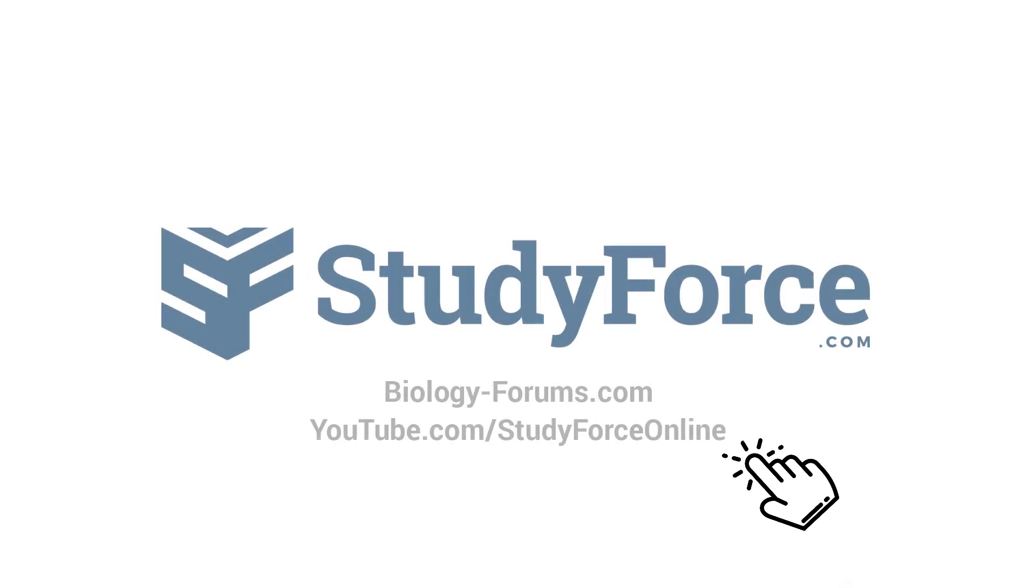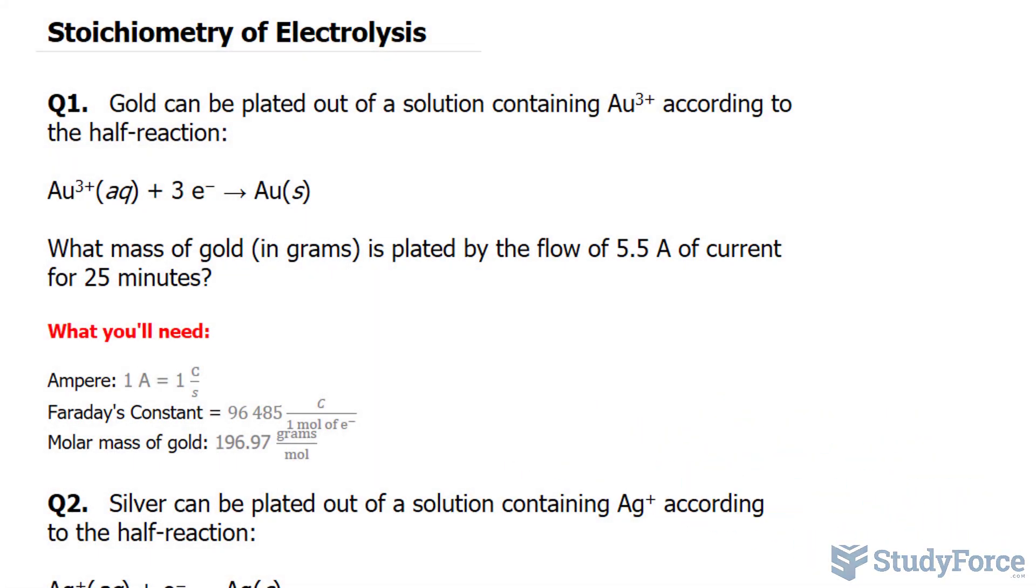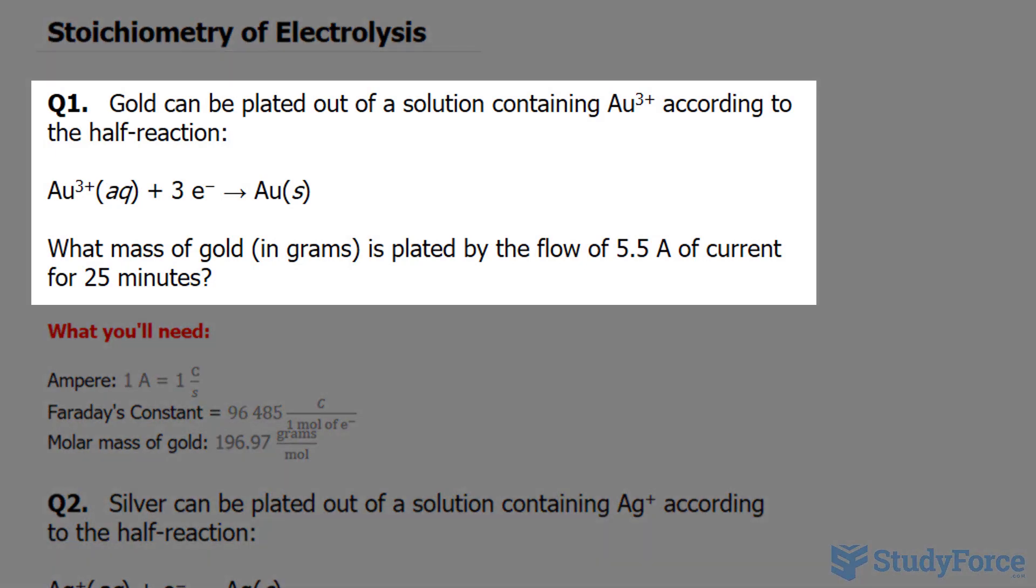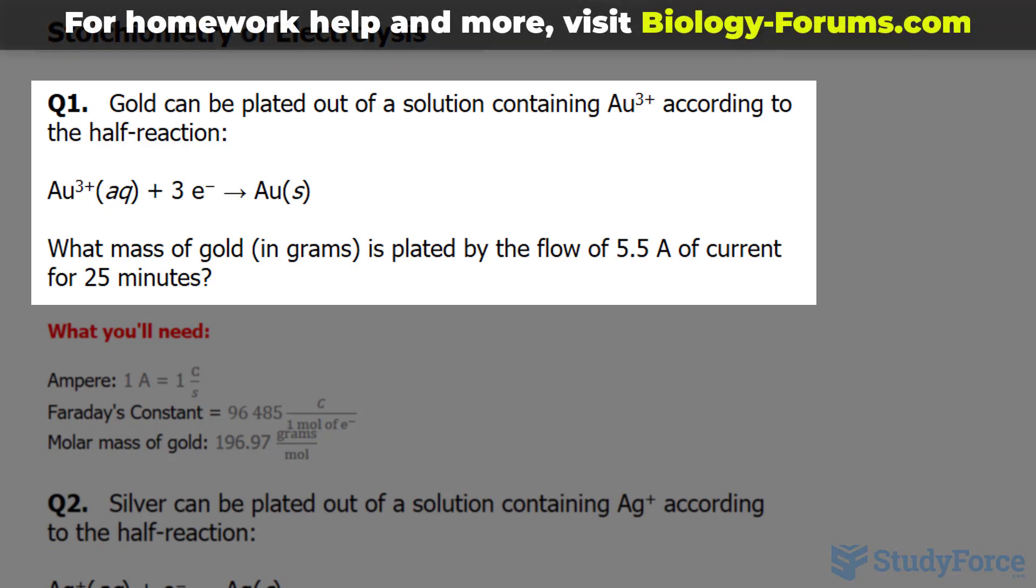In this lesson we'll be discussing the stoichiometry of electrolysis. Question 1 reads: Gold can be plated out of a solution containing Au3+ ions according to the half reaction shown underneath. What mass of gold in grams is plated by the flow of 5.5 amperes of current for 25 minutes?